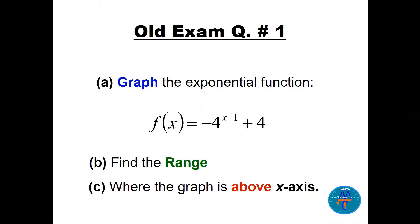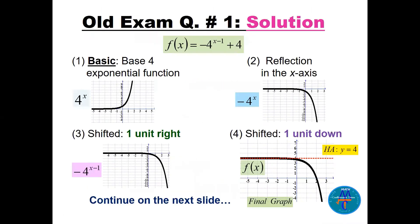We need to find the range and where the graph is above the x-axis. An important point: the base here is four, not minus four, because we cannot accept a negative base. We graph by steps — the base form for an exponential function passes through (0,1), as seen in the lecture. Since the base is greater than one, it is increasing.